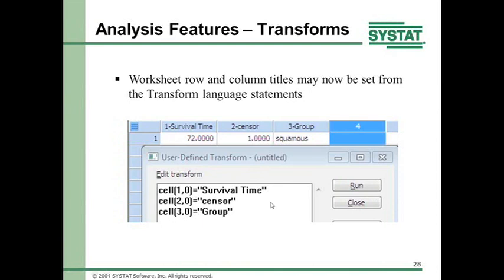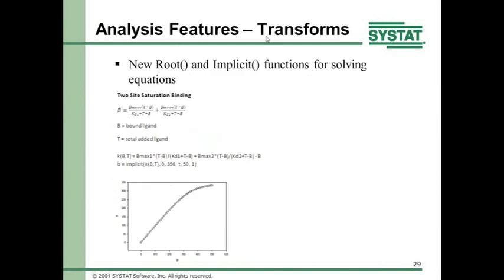Analysis features for transforms include root functions for solving implicit equations. This is what is used in the curve fitter to solve implicit functions and do implicit function curve fitting. An example shows the equation, describes the dependent and independent variables, how you write it in the transform language, how you use the implicit function in the transform language, and the results of solving an implicit function for values of the independent variable.